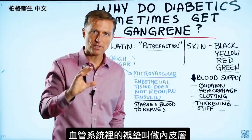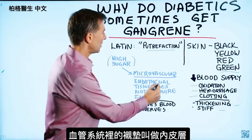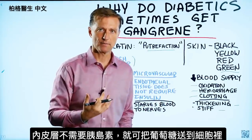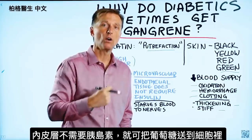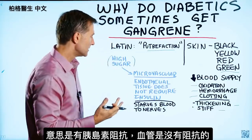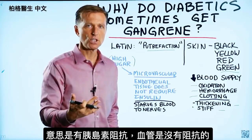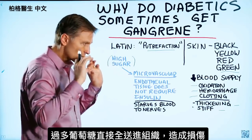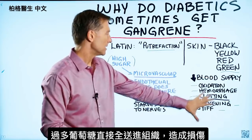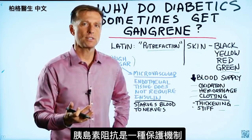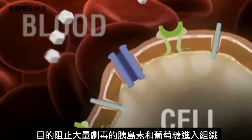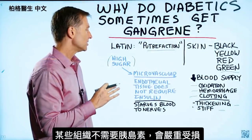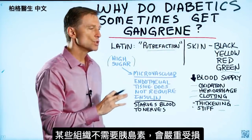The lining on the inside of the vascular system is called the endothelial layer. This layer does not require insulin to transport glucose into those cells, which means that if you have insulin resistance, you won't have any resistance there. If there's too much glucose, it's going to drive it right into the tissues, and that's really what's creating the damage. If you look at insulin resistance as a protective mechanism to block insulin and glucose from going into the tissues because it's toxic at large amounts, there are certain tissues that don't require insulin, and those usually get hammered.